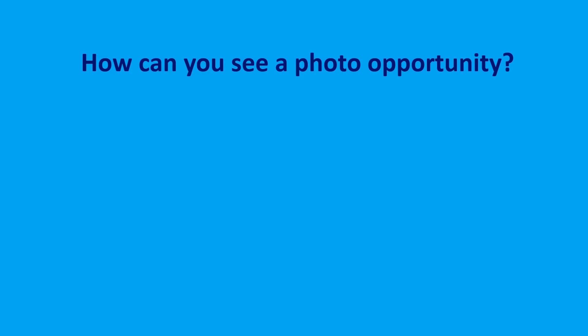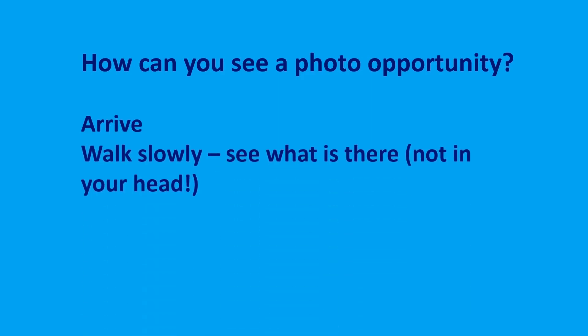But how can you see a photo opportunity? Here's a little technique for when you're out with your smartphone camera. You arrive at your garden or a room to take some photographs. You take a look around, breathe a little, and walk slowly, just seeing what is there. Try not to get in your head — your head's telling you to look for a photograph, or that you're hungry, or to check your Facebook. Tell your head to be quiet and just look at what is there. Walk slowly around the space. Don't look for a photo — just notice what you can see, and then the photo will find you.